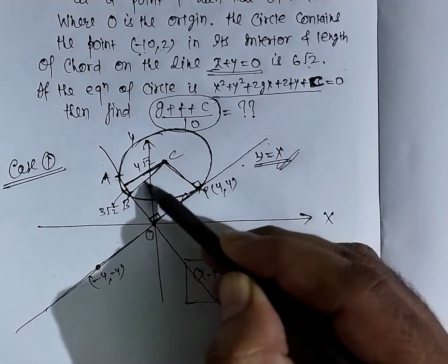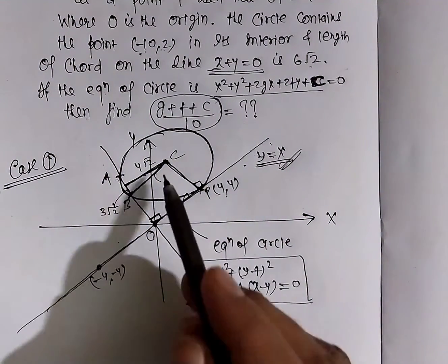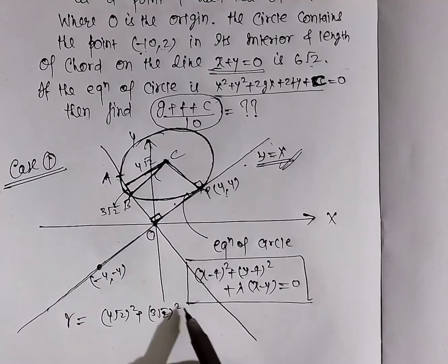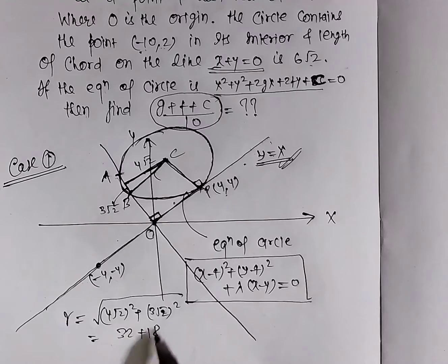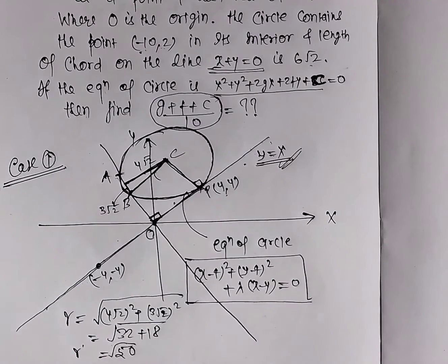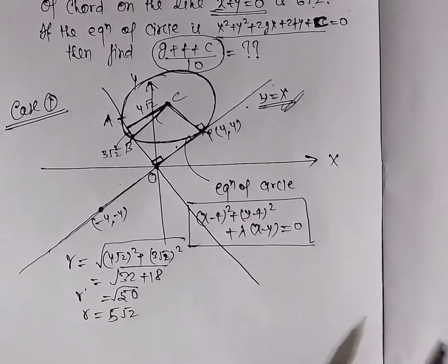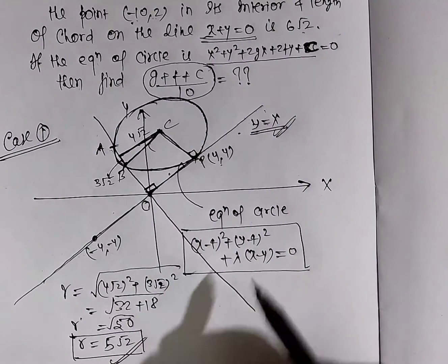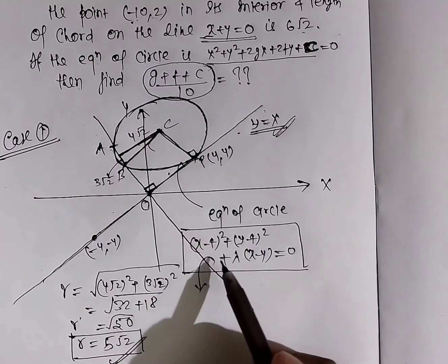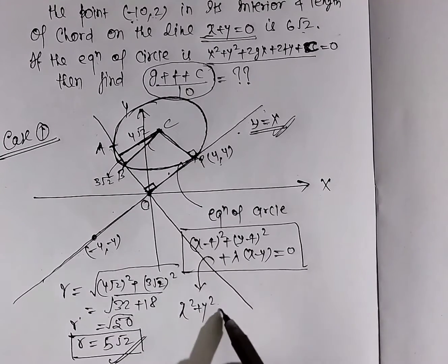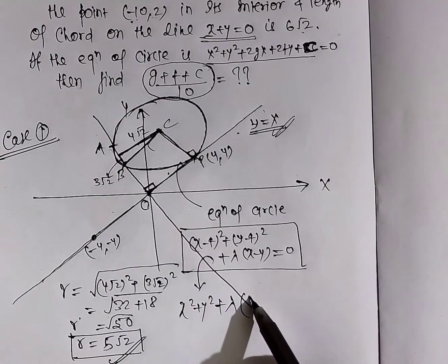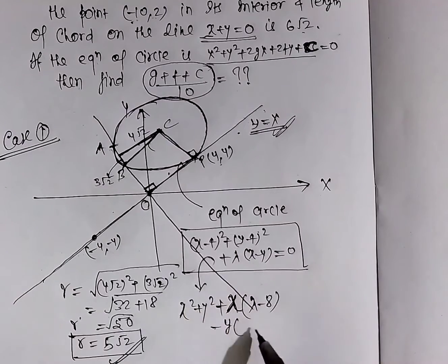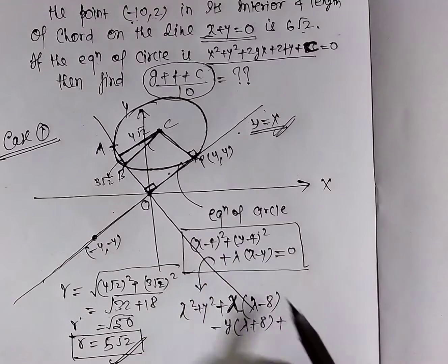By Pythagoras theorem, radius² = (4√2)² + (3√2)² = 32 + 18 = 50, so radius = 5√2. अब circle को expand करेंगे: x² + y² + (λ-8)x + (λ+8) wait, (λ-8)... Let me expand: x² + y² + (λ-8)x - (8+λ... correction: x² + y² + (λ-8)x + (λ... = 0.